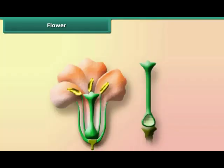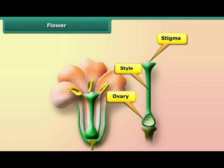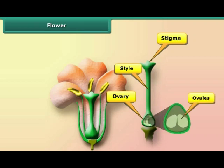The female part of the flower is called the pistil. It is the innermost part of the flower. The pistil has three parts: stigma, style, and ovary. The stigma is the sticky surface at the top of the pistil — it traps and holds the pollen. The style is a tube-like structure that holds up the stigma. The style leads down to the ovary that contains the ovules.